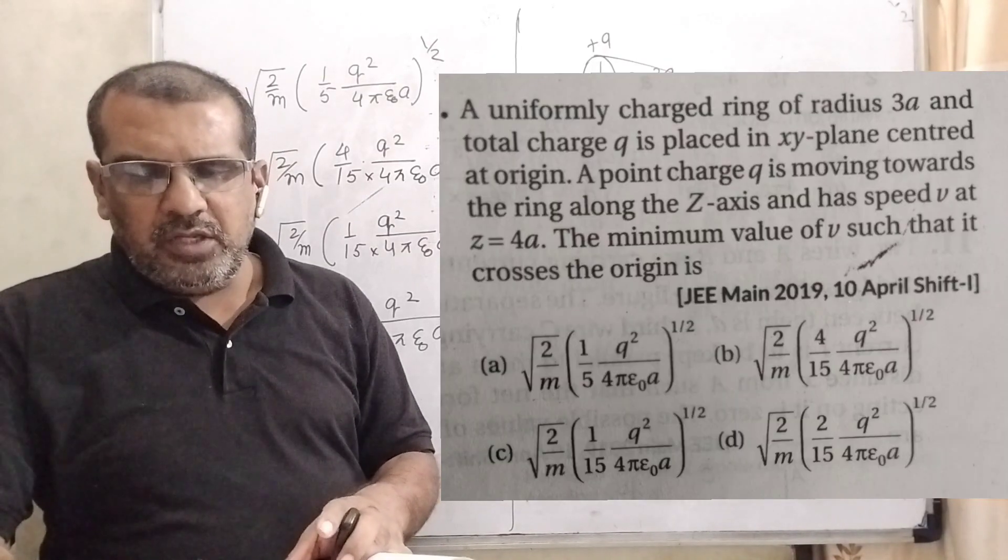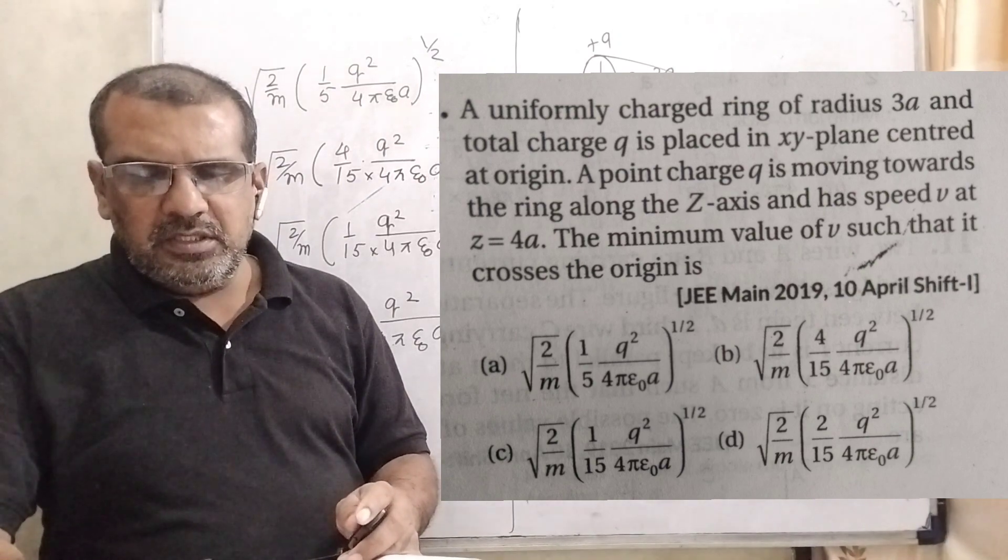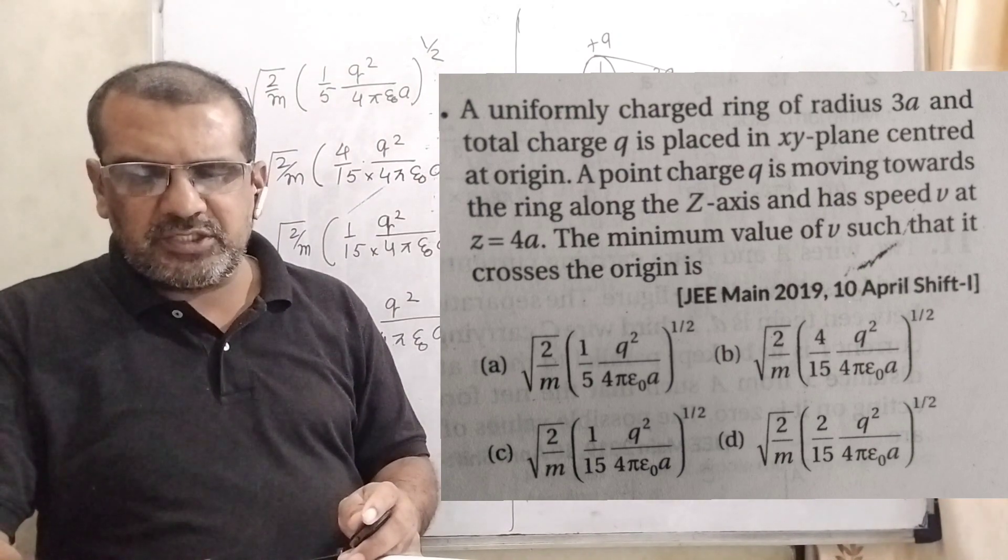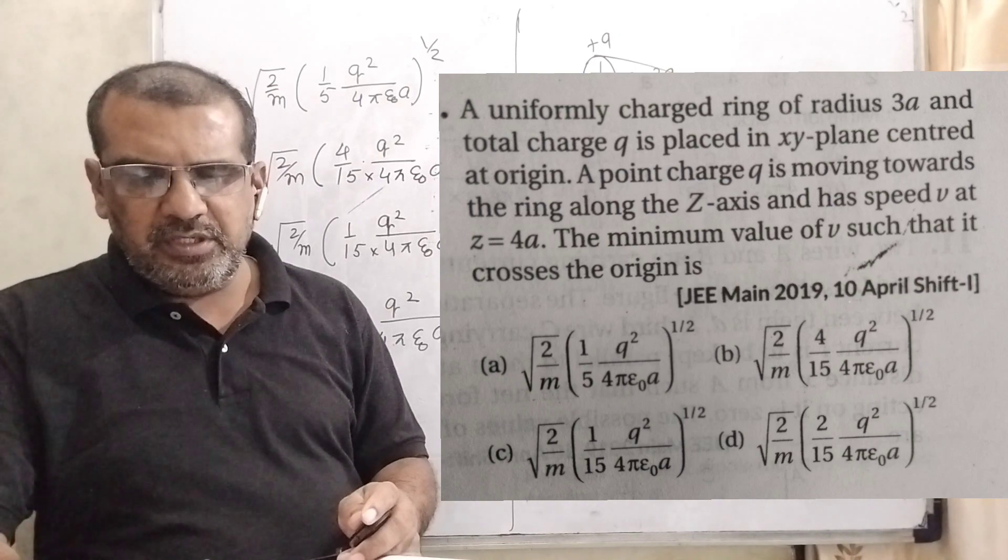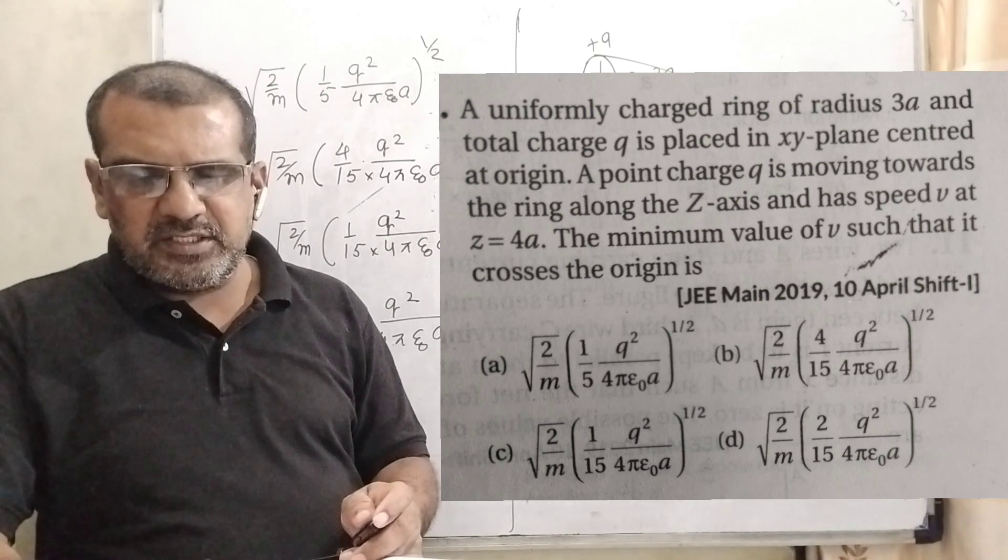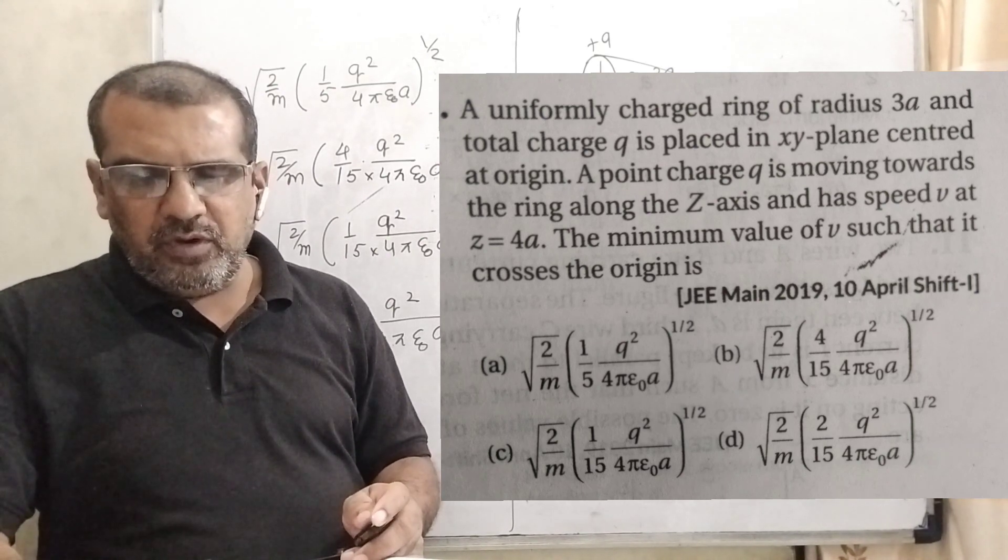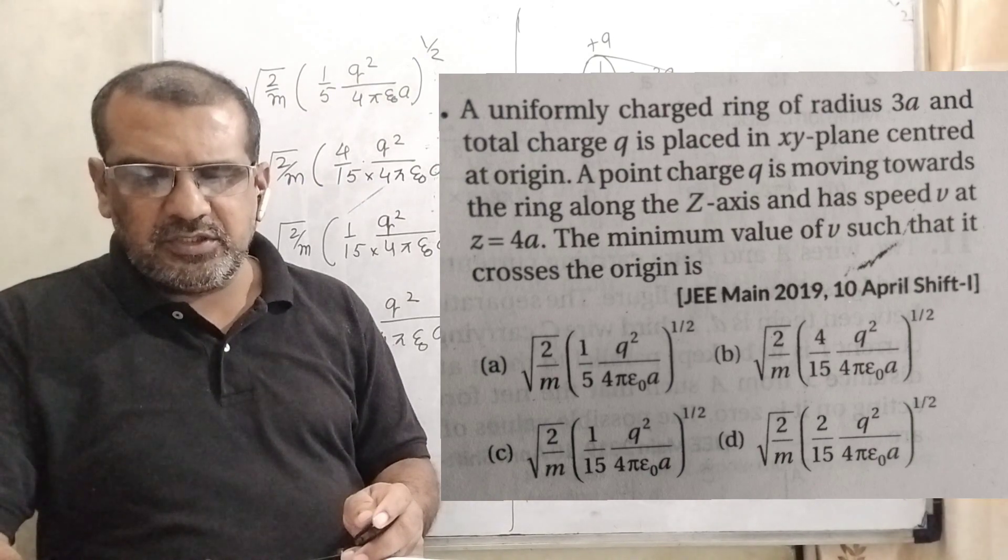Now here is the question. A uniformly charged ring of radius 3a and total charge q is placed in the x-y plane centered at the origin. A point charge q is moving towards the ring along the z-axis and has speed v at z equal to 4a. The minimum value of v such that it crosses the origin is.